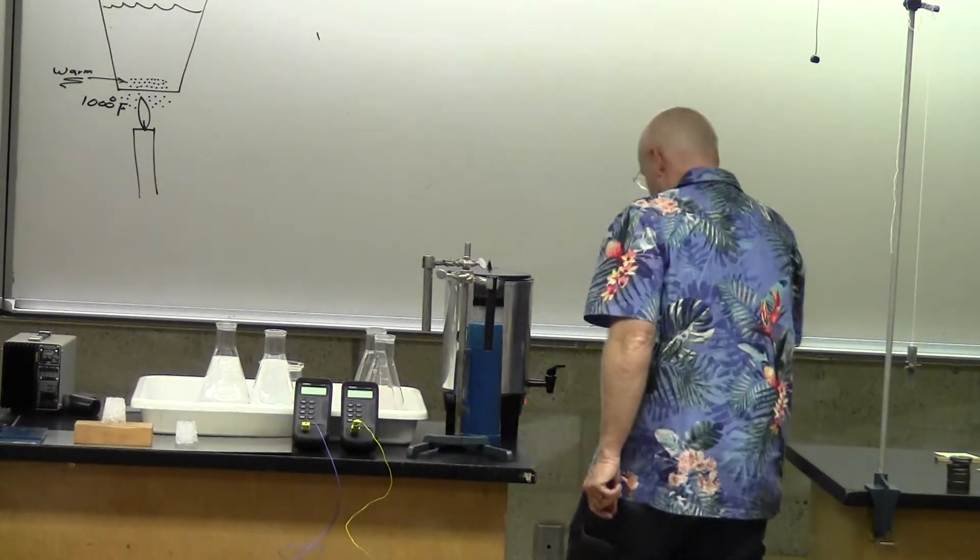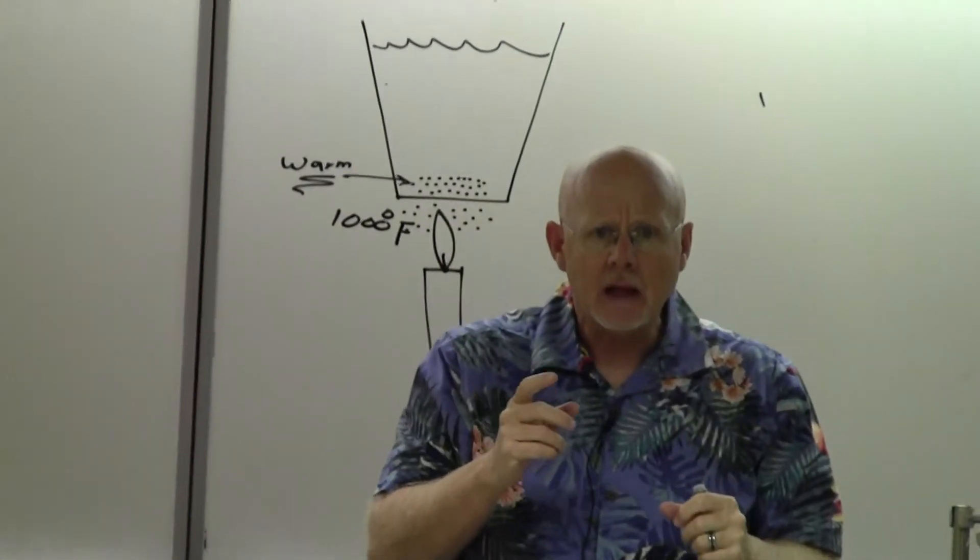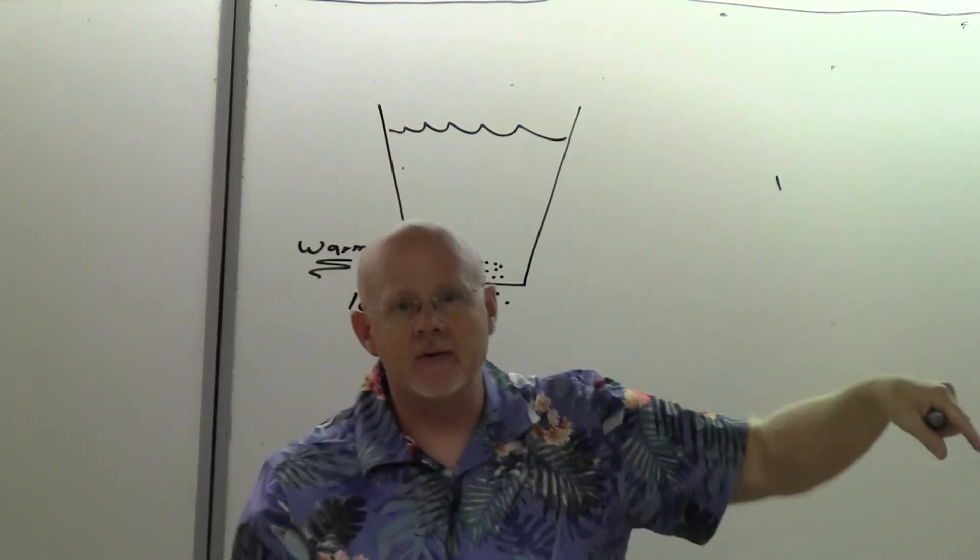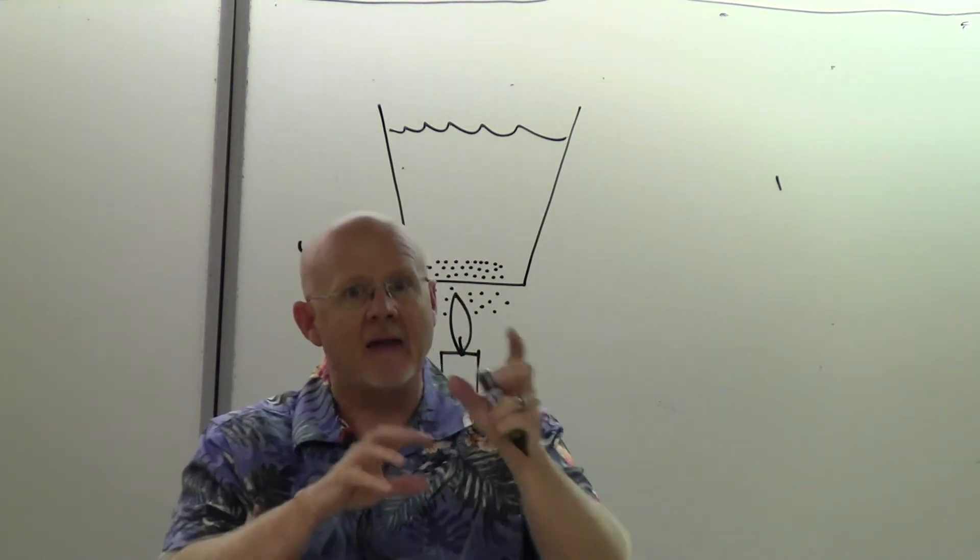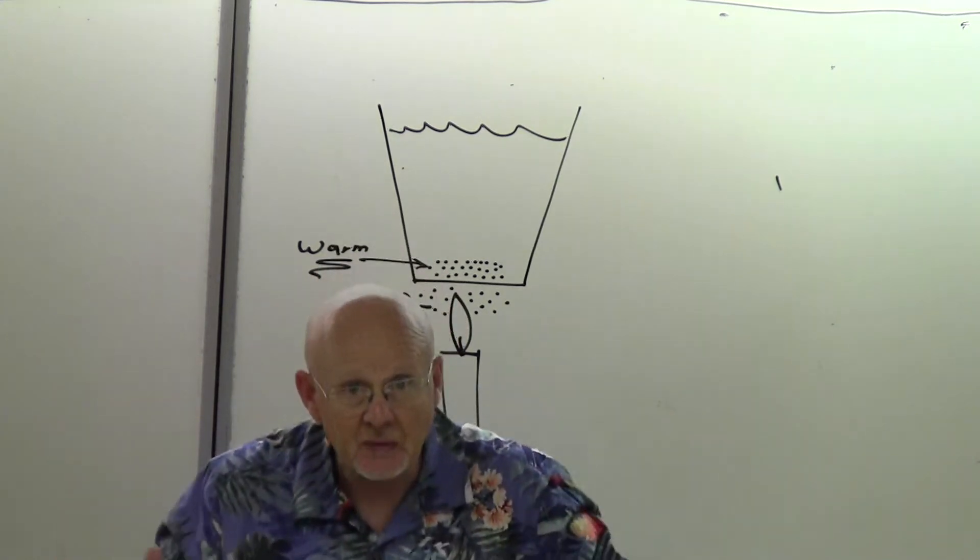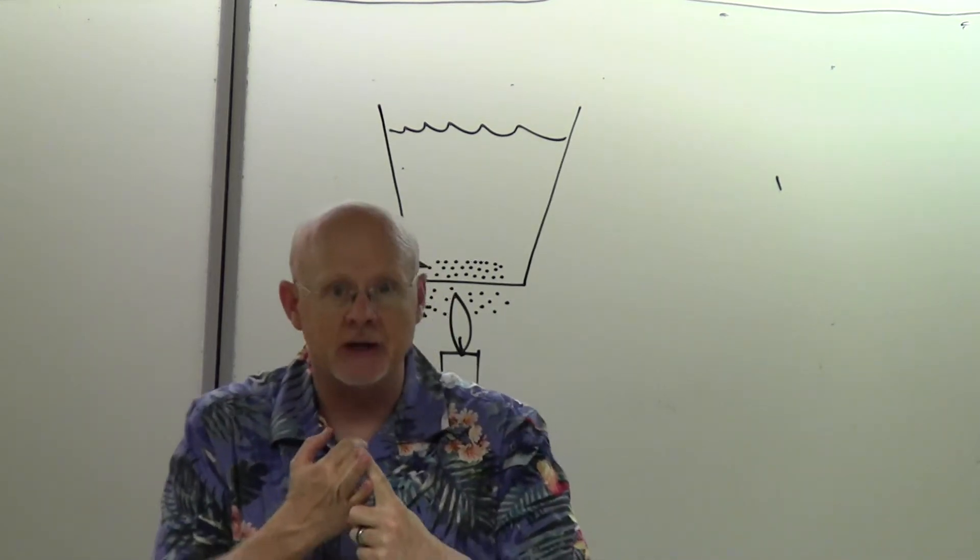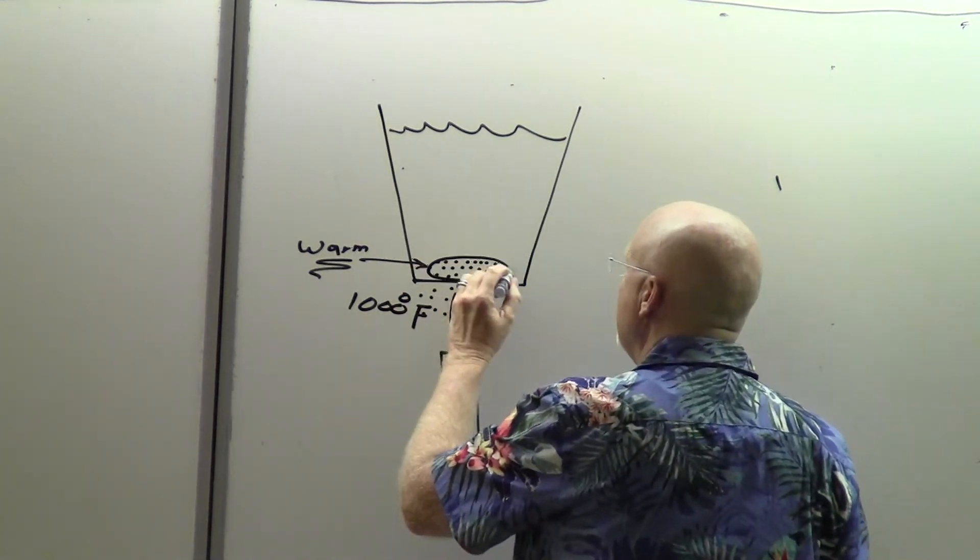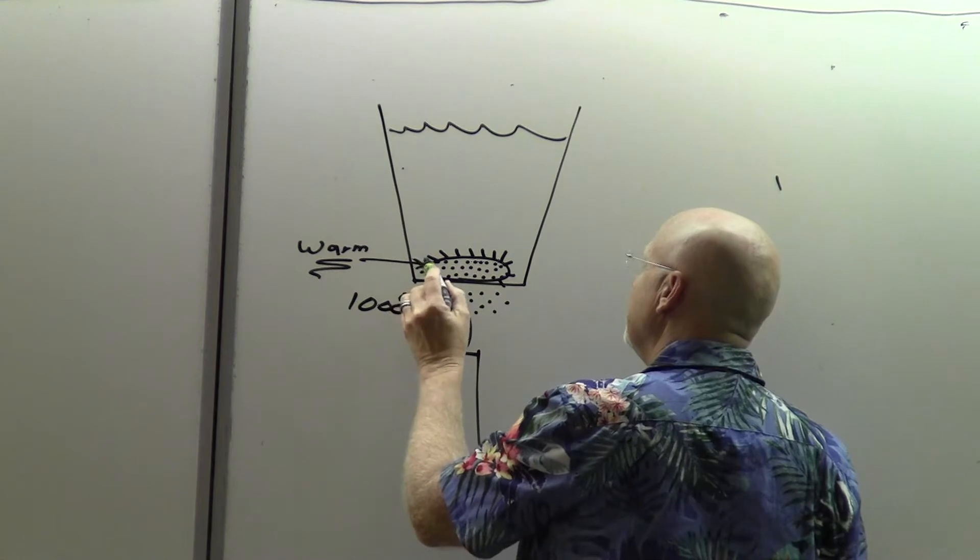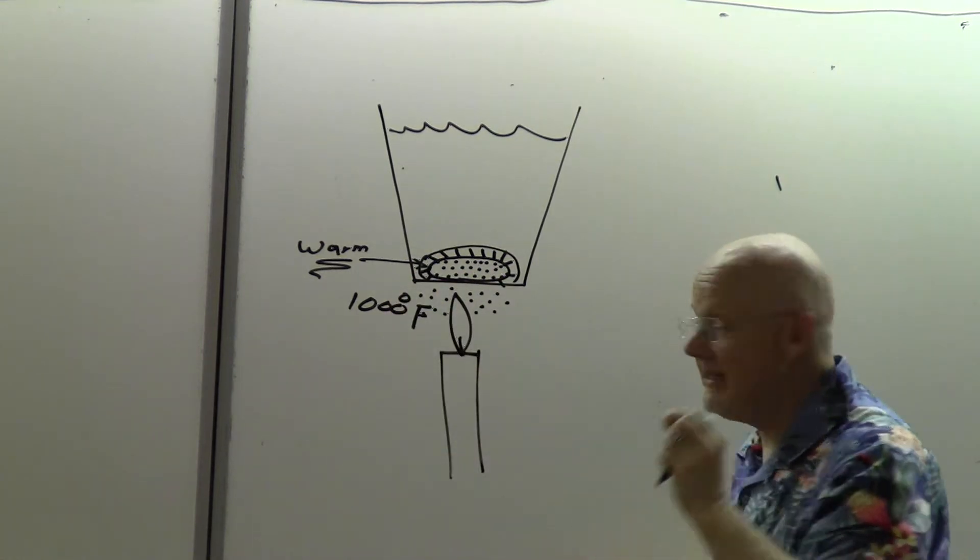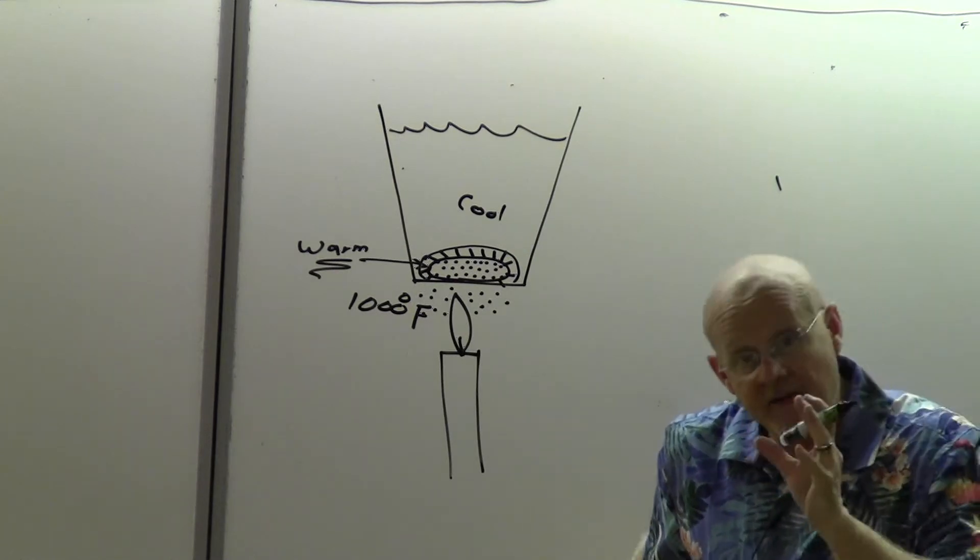So these water molecules as they warm up at the bottom of the cup are expanding. That is their density goes down. Do you remember what we just got done in the last chapter 12? We called it Archimedes principle. Remember we said that if something had a lower density than the liquid or the fluid that it's in, it would go up. And that's what's happening here.